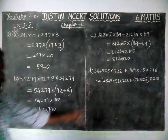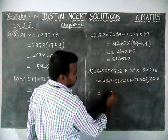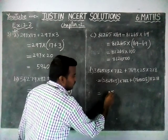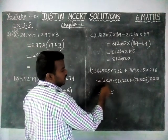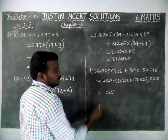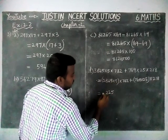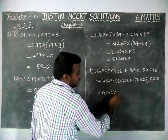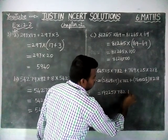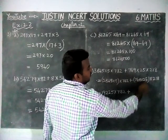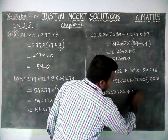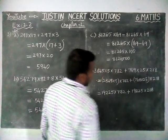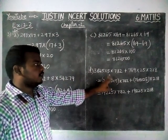We are going to find the answers. 3845 into 5: 5 fives are 25 remaining 2; 4 fives are 20, plus 2 is 22, remaining 2; 8 fives are 40, plus 2 is 42, remaining 4; 3 fives are 15, plus 4 is 19. So 3845 into 5 equals 19,225. Similarly, when multiplying 769 into 25, we get the same answer 19,225. So we now have 19,225 into 782 plus 19,225 into 218, and by using the associative property we found this step.